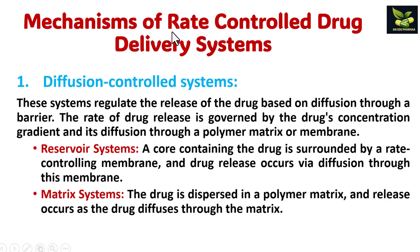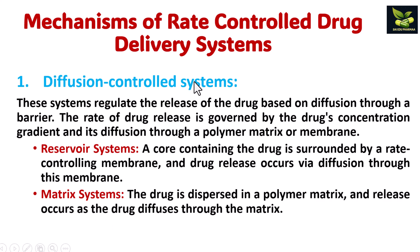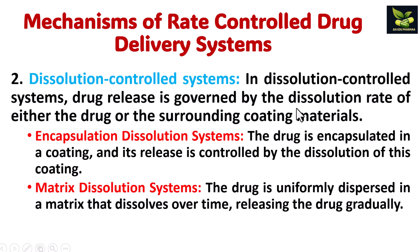We will now discuss the important mechanisms related to rate control systems. First is diffusion controlled — the rate of drug release is governed by the drug's concentration gradient and its diffusion through a polymer matrix or membrane. There are two types: reservoir system and matrix system. In the reservoir system, a core contains the drug surrounded by a rate controlling membrane, and drug release occurs via diffusion through this membrane.